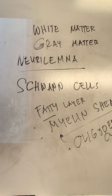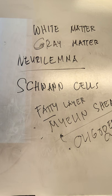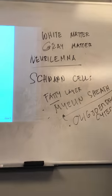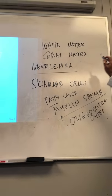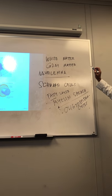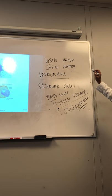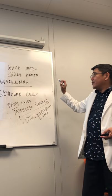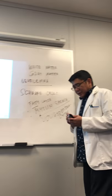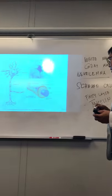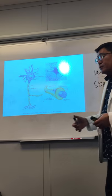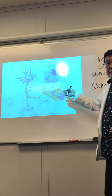For example, in autopsy, you take out the brain and slice it — either sagittal section or coronal section. You see the whitish, pale part — that's the white matter. So you understand the difference between the neurolemma and the myelin sheath.